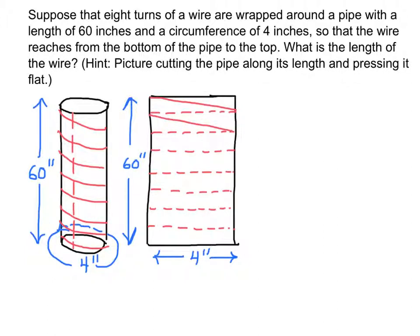The first wire is going to wrap around like this and it's going to meet on the other side right here. There's the second turn of the wire. There's the third turn of the wire, the fourth turn of the wire, fifth, sixth, seventh, and eighth turn of the wire. Imagine they're straight.